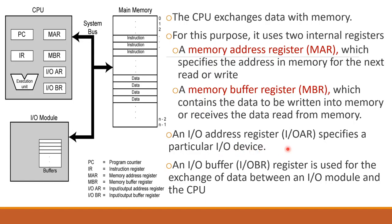The IO Address Register specifies the particular IO module device. The IO Buffer Register holds data — it is used for the exchange of data between the IO module and the CPU, holding data during transfer between the IO device and the CPU.